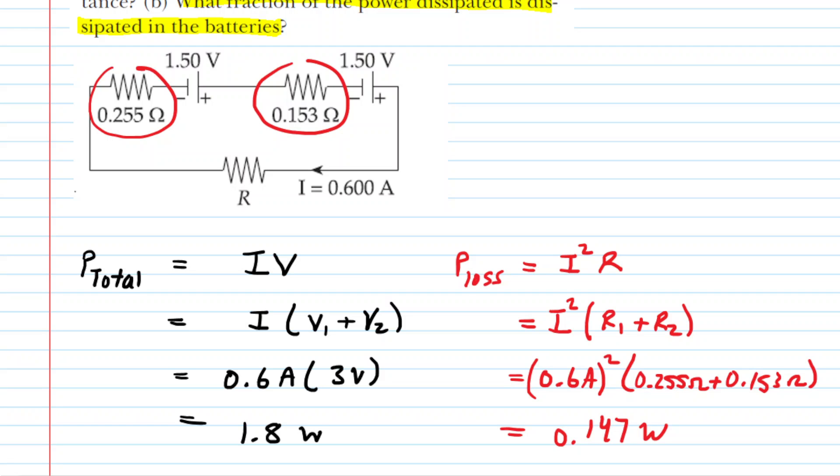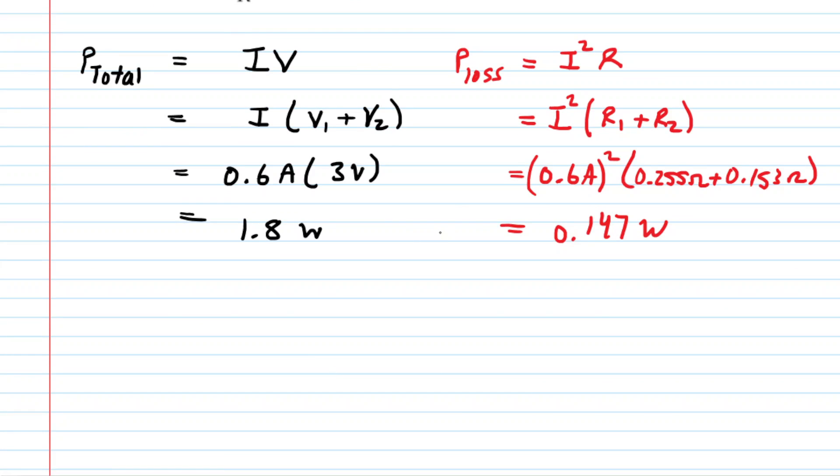And now, to get the fraction of power dissipated, we would simply divide these. So in other words, we're going to do the power lost divided by the power total. And this will give us that fraction. So here we go. We'll keep the color coding. We'll go 0.147 watts divided by the 1.8 watts. This turns out to equal about 0.0817. If you want that as a percent, you could multiply by 100, and you would get about 8.17%. So about 8% of the total power delivered by the battery is dissipated in the form of heat through the internal resistance of those batteries.